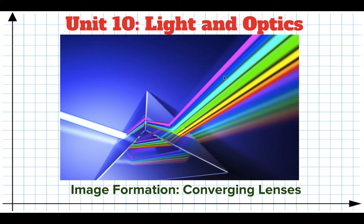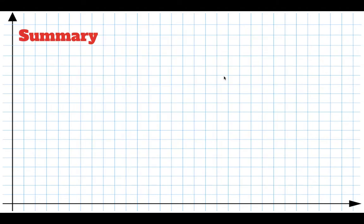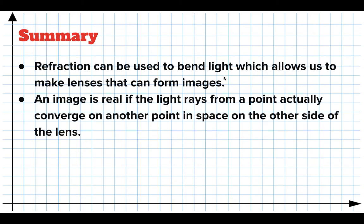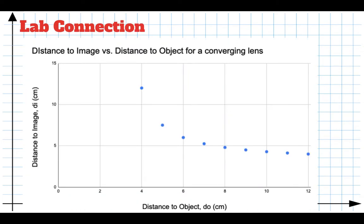Now we're back from lab and we want to put it together and see what we can learn. Quick reminder: refraction can be used to bend light, which allows us to make lenses. These lenses can form images. We say that the image is real if the light rays actually converge on the other side of the lens at a point in space — that's what we call a real image.